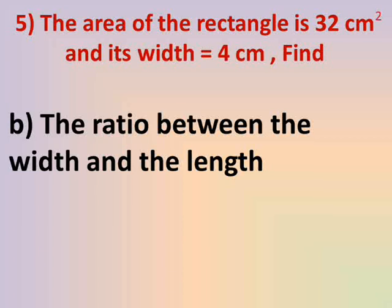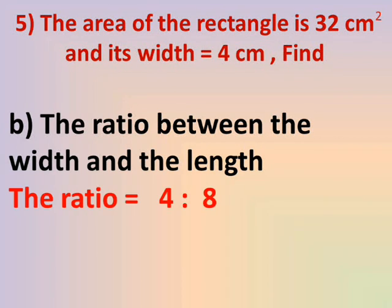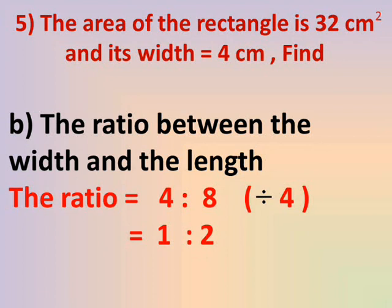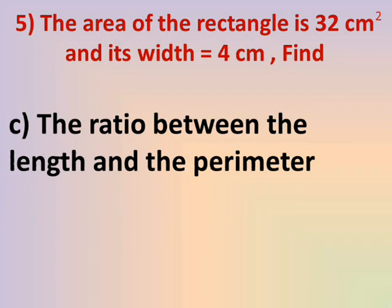Number B: The ratio between the width and the length. The width is 4 and the length we just found is 8. The ratio is 4 to 8. In simplest form, we divide both by 4: 4 ÷ 4 = 1 and 8 ÷ 4 = 2, giving ratio 1 to 2.